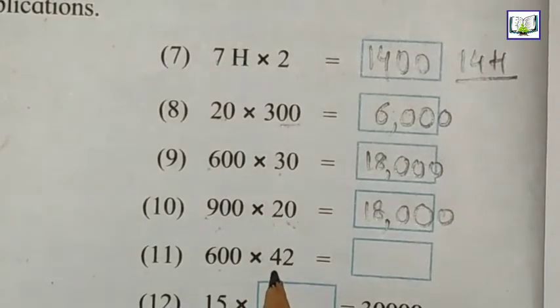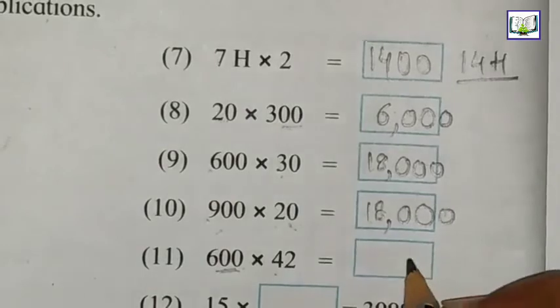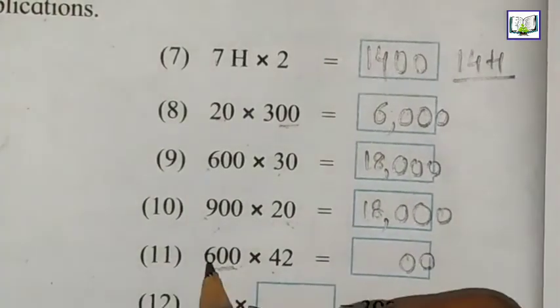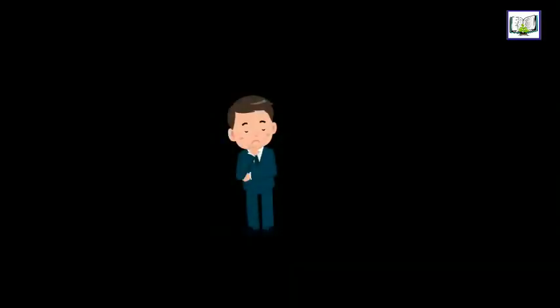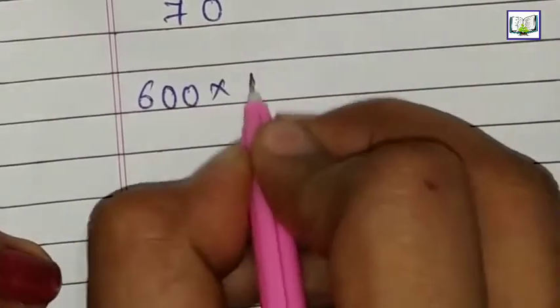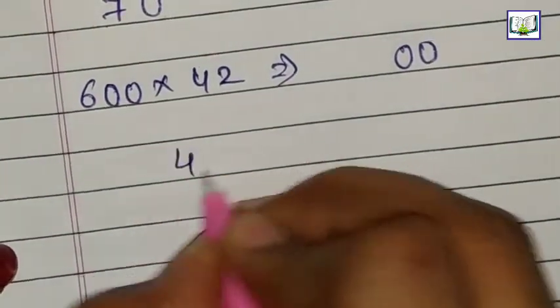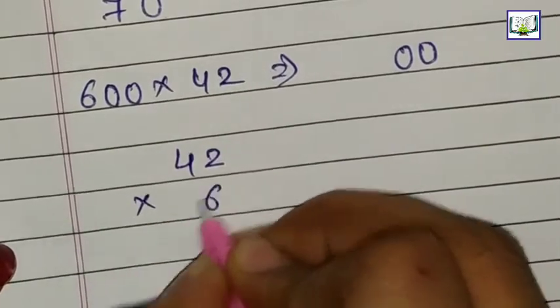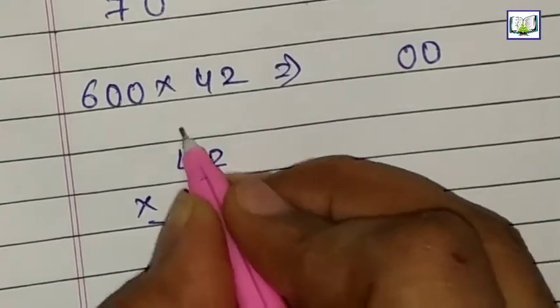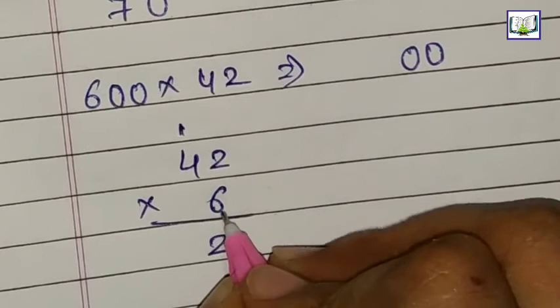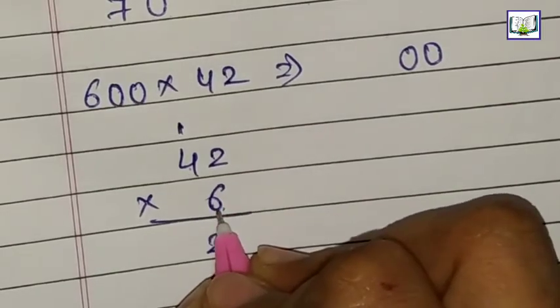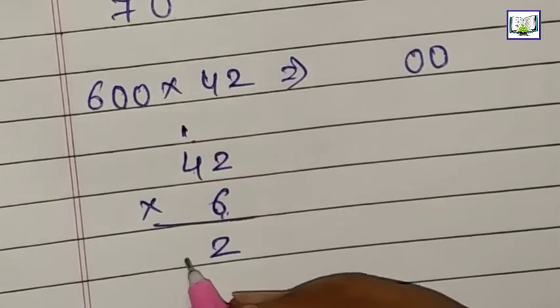600 multiplying by 42. How many zeros? 2 zeros. So first we take out 2 zeros. Now we will multiply 6 by 42. For this, we can see this method: 600 multiplying by 42. We have taken 0, 0 out first. 42 multiply by 6. 6 ones are 6, 6 twos are 12, 1 carry, 2 here. 6 fours are 24, plus 1 is 25.